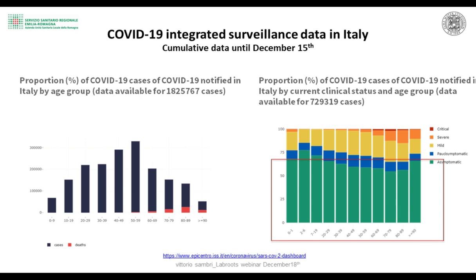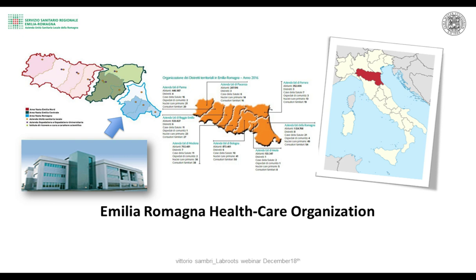Let me describe our public healthcare organization in the region. We are located in the south of northern Italy — the southernmost region of the northern part of the country. The public health organization divides the area into three different macro areas: Area Vasta Emilia Nord, Area Vasta Emilia Centro, and the Romagna area where I am located.